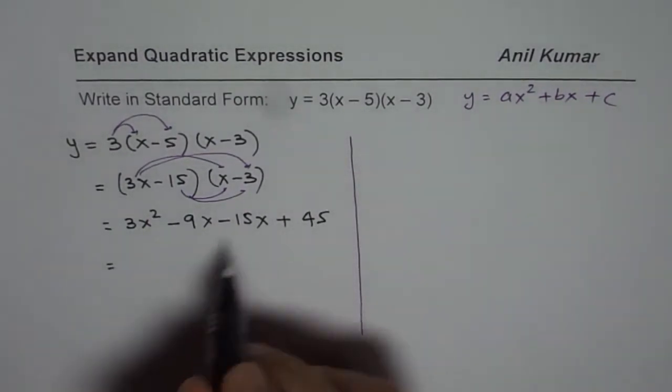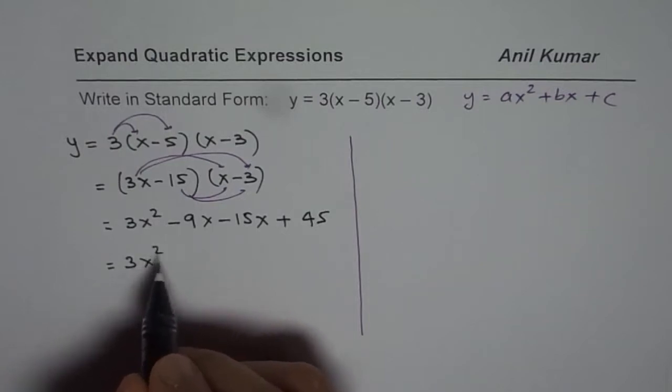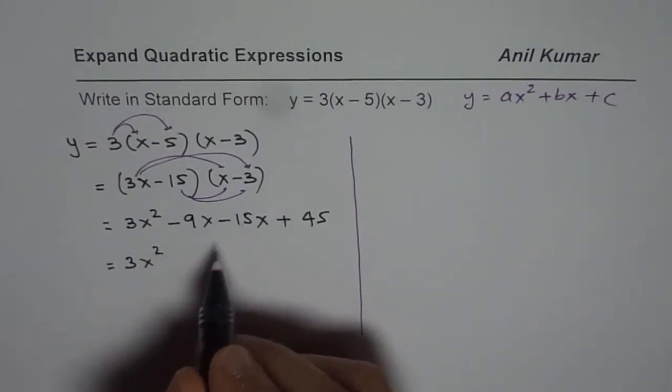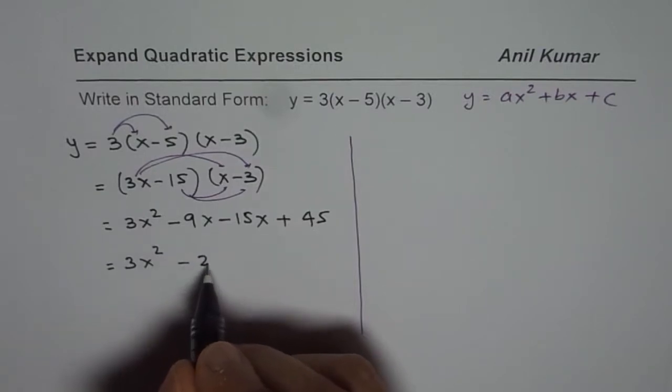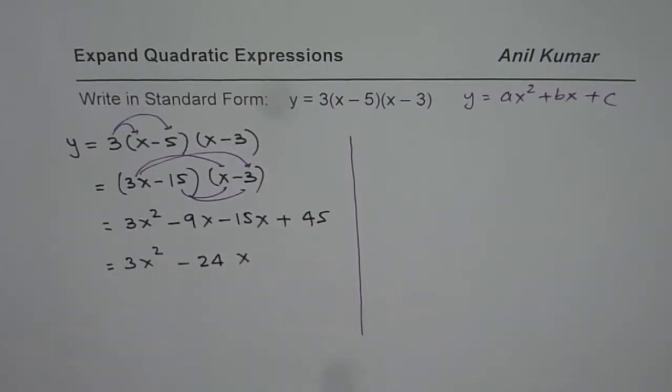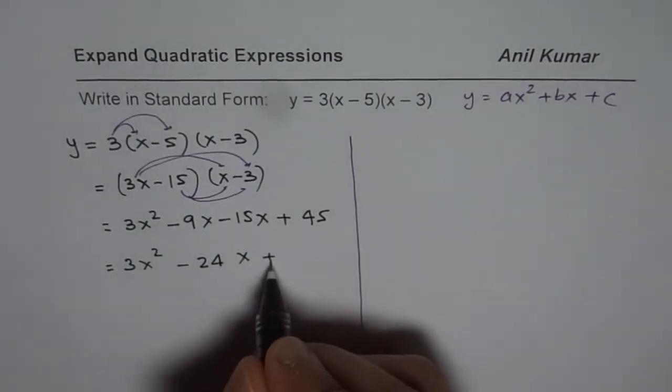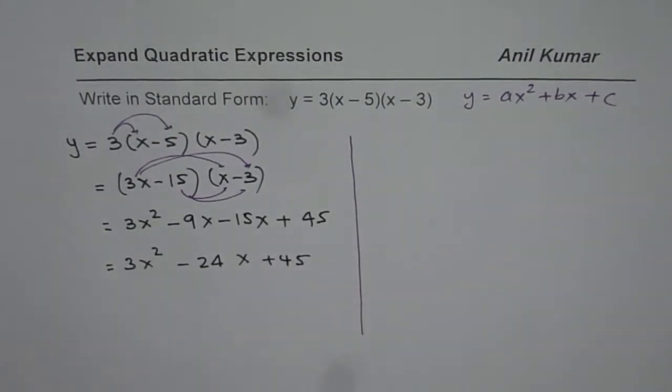And we can now combine the like terms. We get 3x square minus 9 minus 15 is what? Minus 24. So let me write minus 24x plus 45. So that is the answer. So that is one way of doing it.